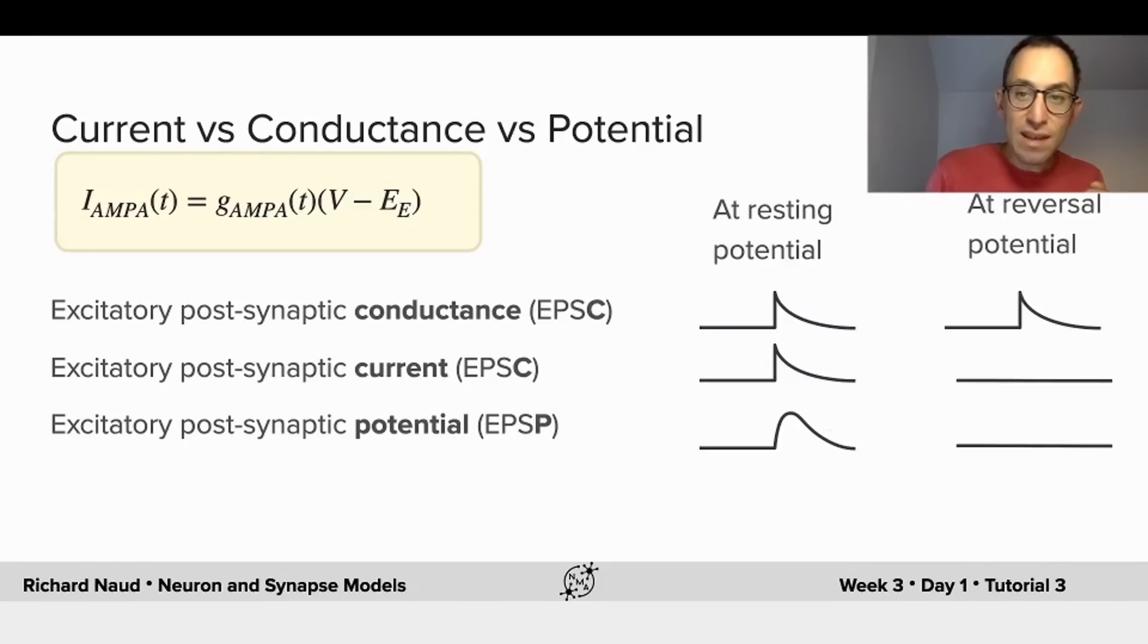Now, if instead we are at the reversal potential, meaning that V is equal to E, this factor is zero. The membrane potential is such that the ions do not want to cross the cell membrane, even if the ion channels are opening. This is what's happening here. The conductance is changing, but it leads to no current passing through, and no detectable change in potential. That's what we call shunting. It's the shunting effect of conductance-based synapses.